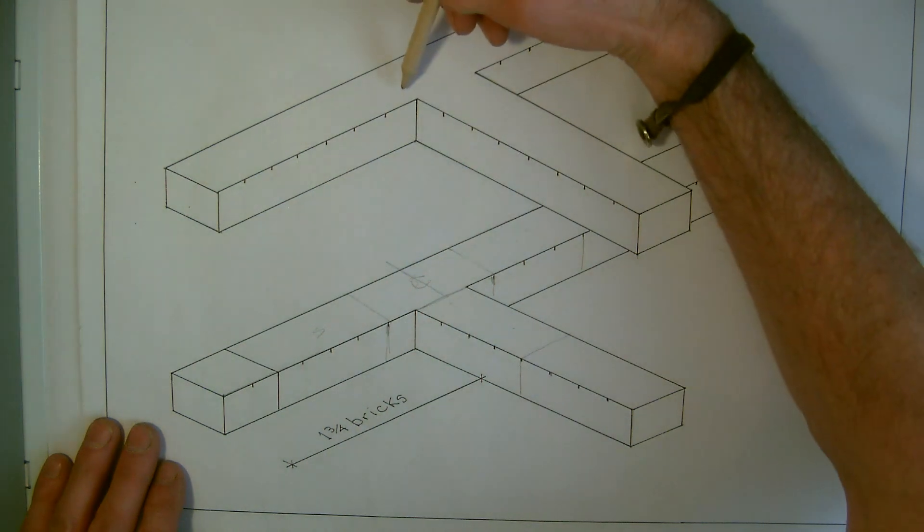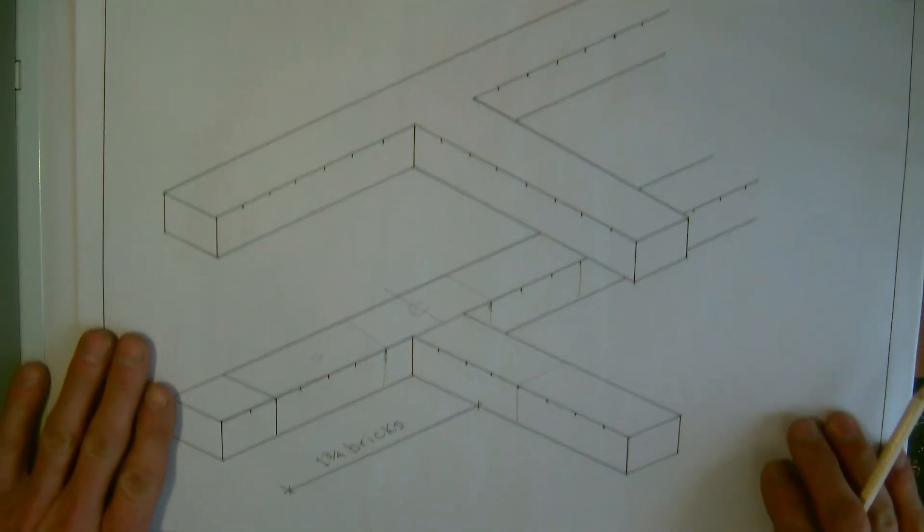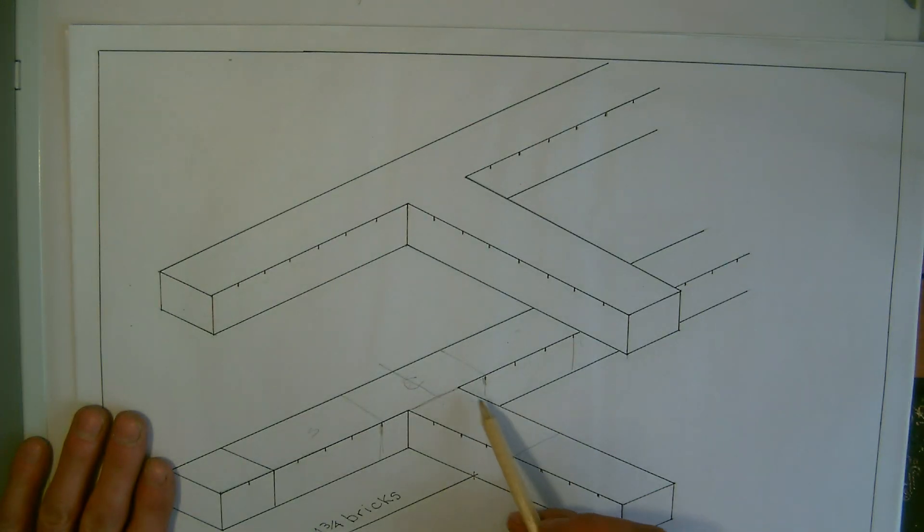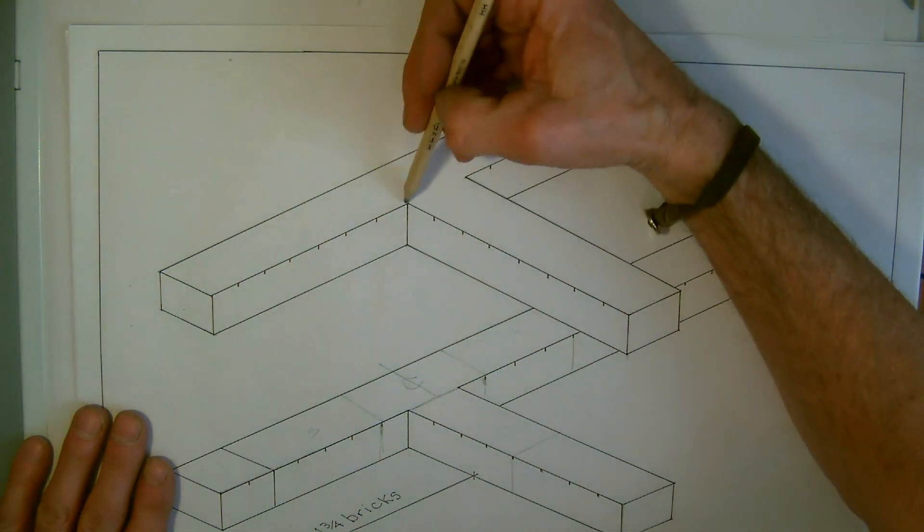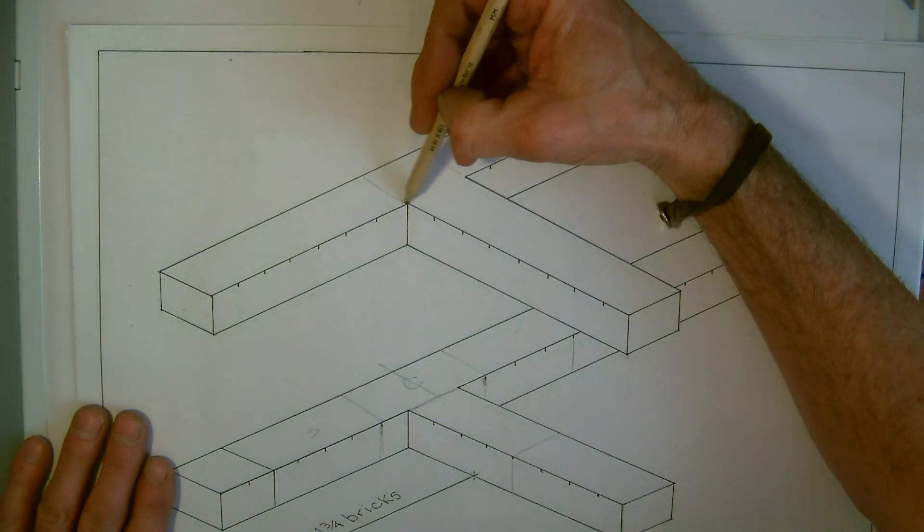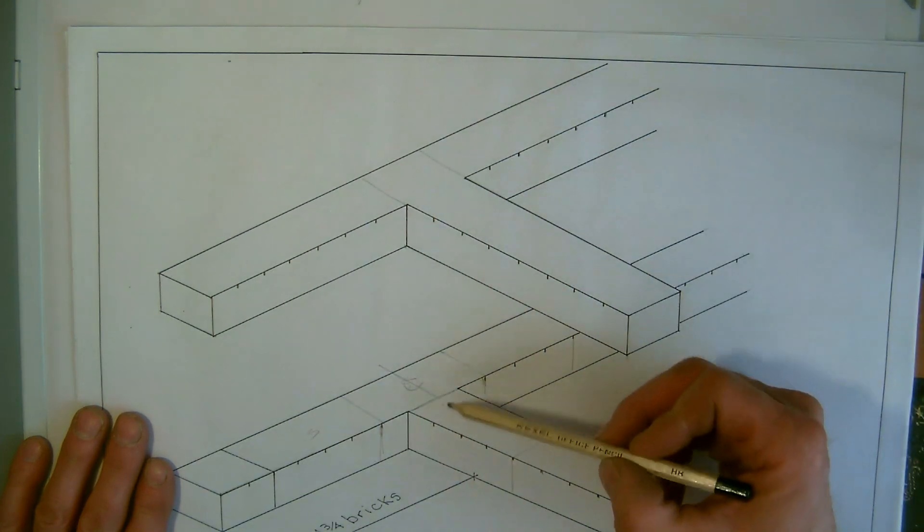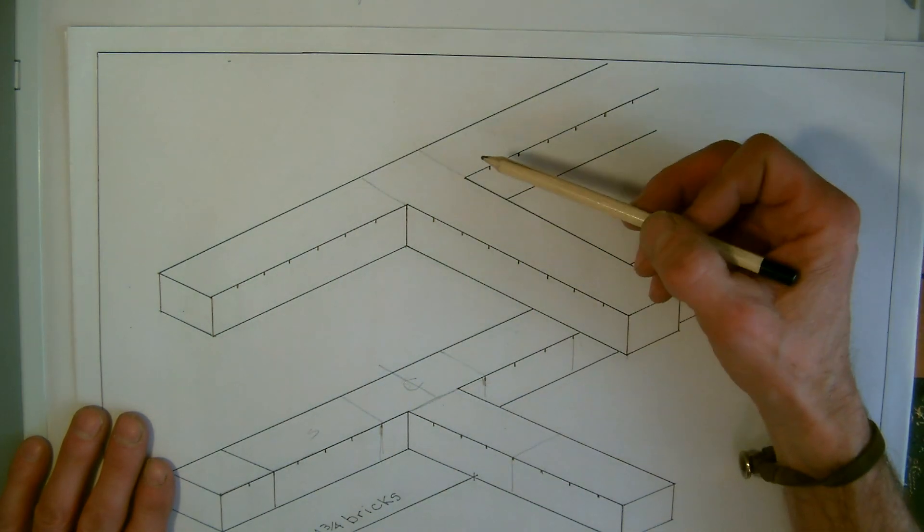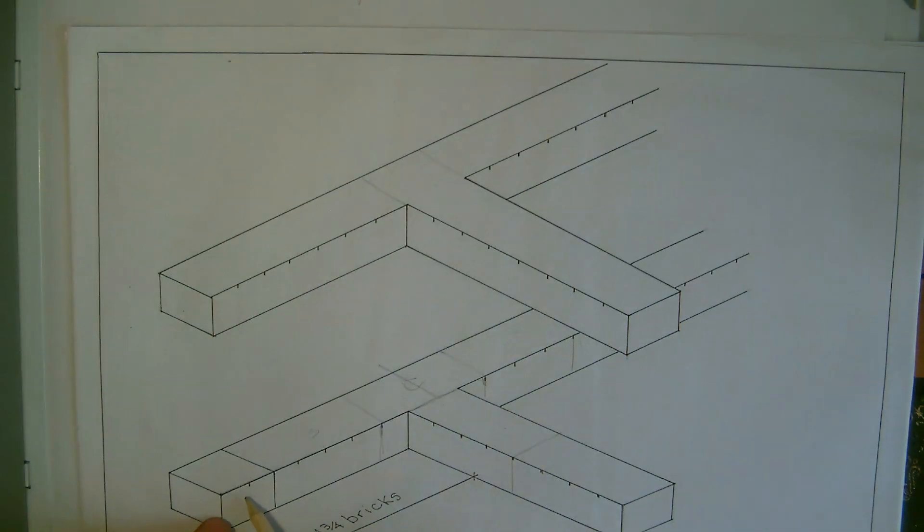We had stretcher and stretcher, so they're stretchers all the way through. So we now, straight away when we come to the second course, because the first course butted up, this one we can draw straight across without even working anything out. We can draw this across because we know by the rules of bonding that it butted up, this must tie through.